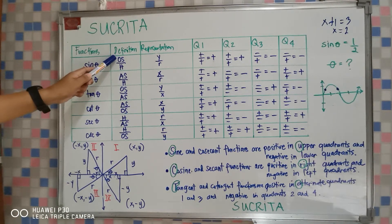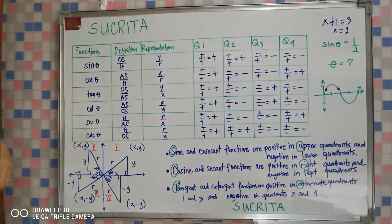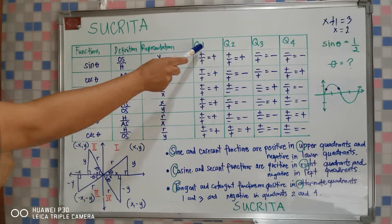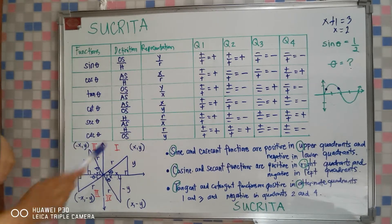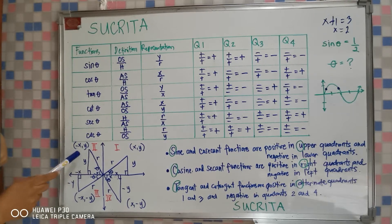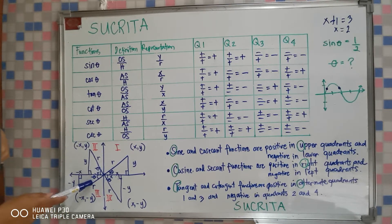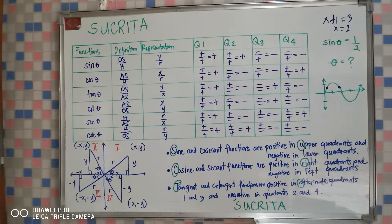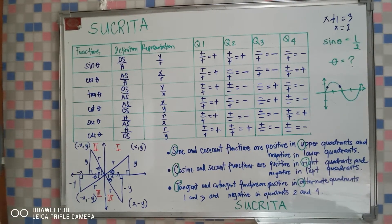Sin θ is equal to the opposite side over the hypotenuse, represented as y over r. In each quadrant, let's determine what would be the sign of the sine function — that is, whether it is positive or negative. In quadrant 1, y is positive and r is always positive, so the sine function is positive. In quadrant 2, y is positive and r is positive, so the sine function is positive. In quadrant 3, y is negative and r is positive, so the sine function is negative. In quadrant 4, y is negative and r is positive, so the sine function is also negative.